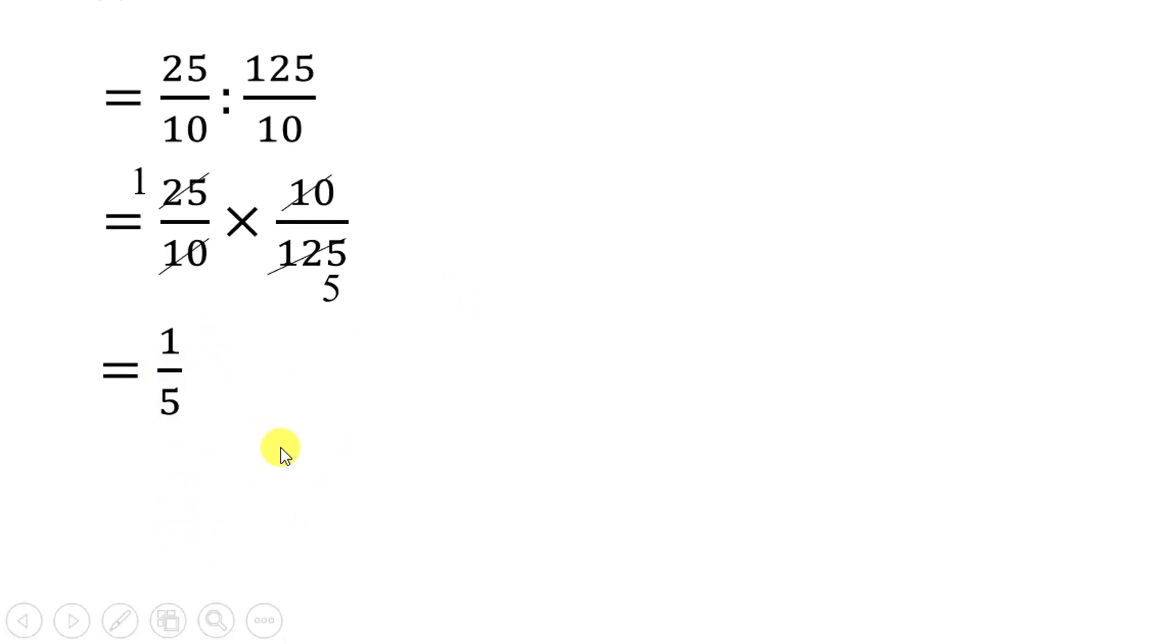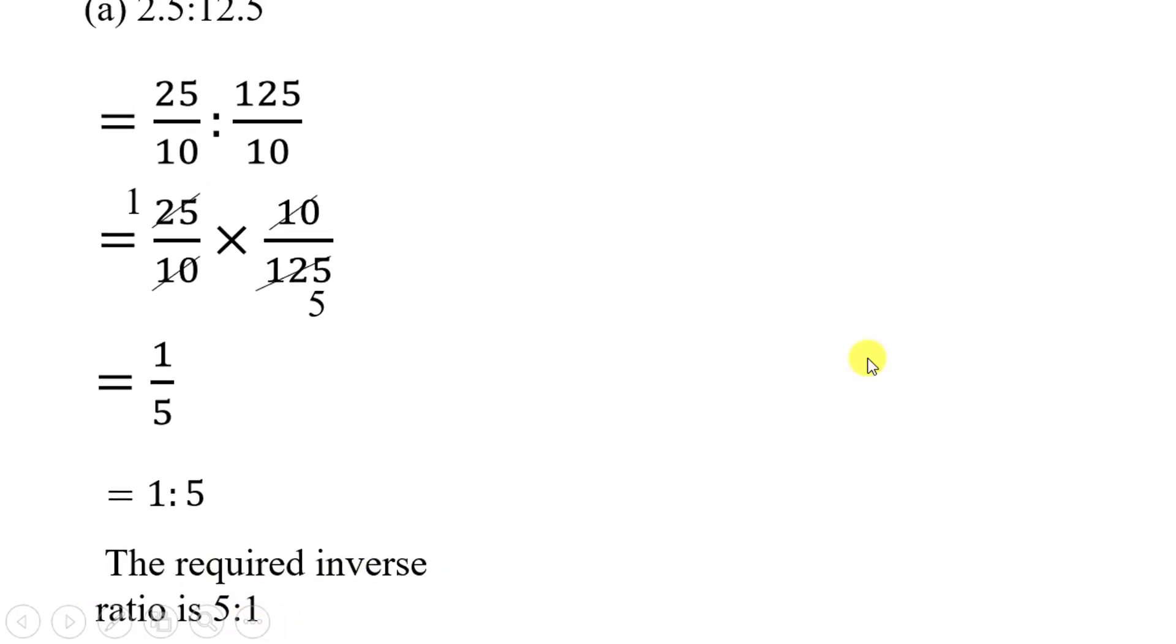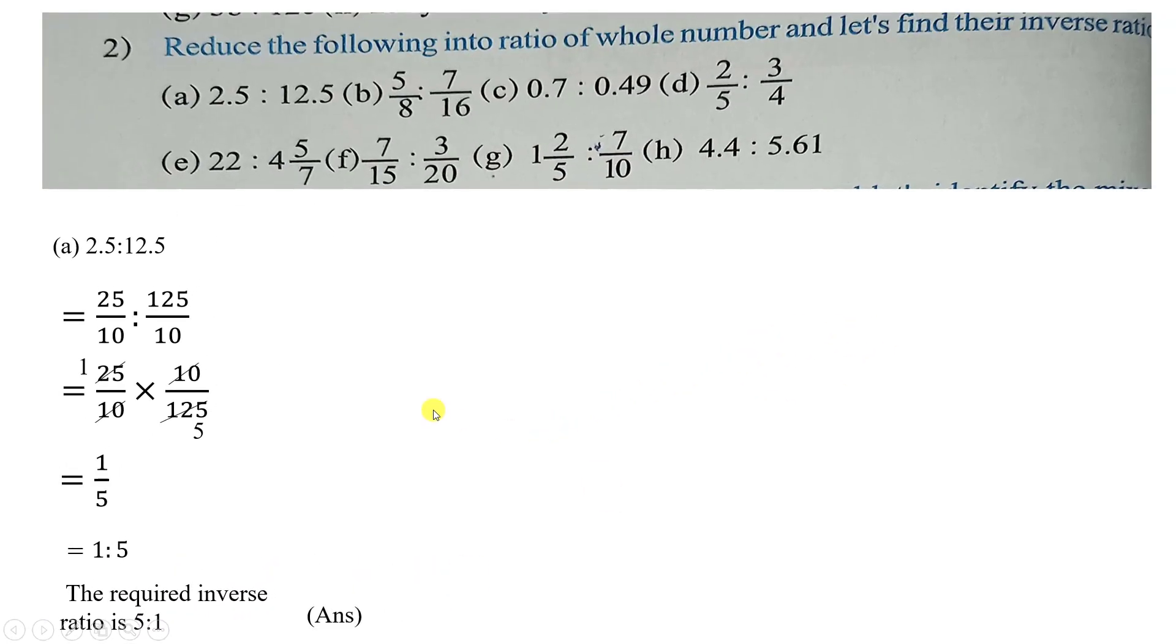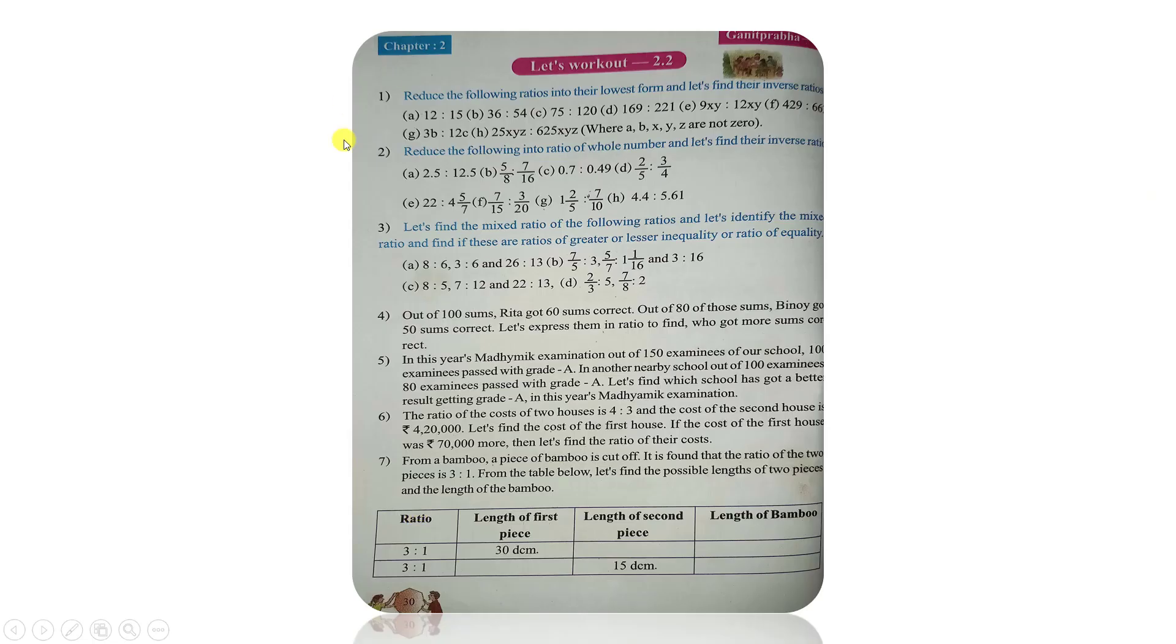Divide by 1, simply we can put ratio sign, that is 1:5. We cut the inverse ratio, the required inverse ratio is 5:1. Okay? Alright.